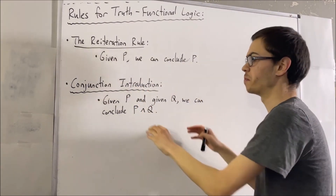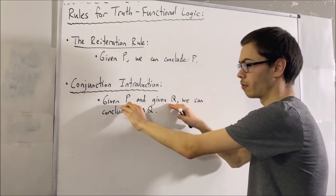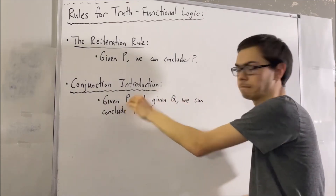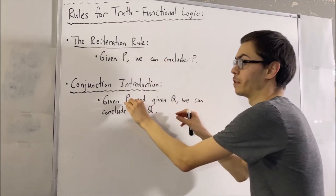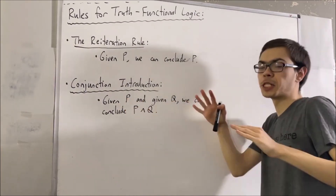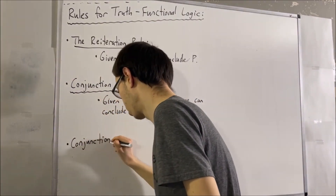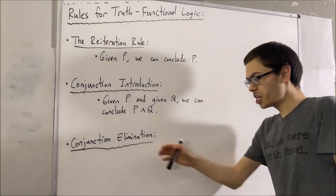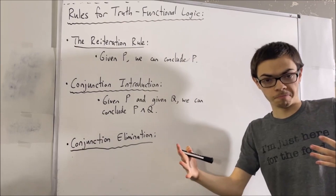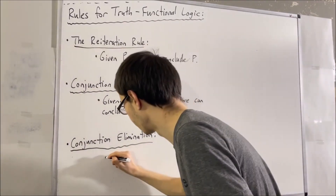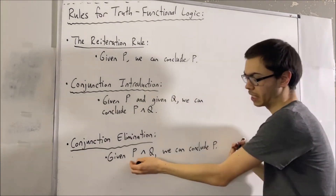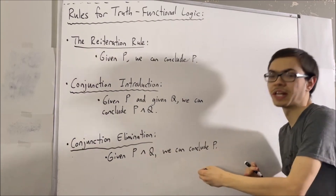It doesn't matter the order in which you've been given P and Q. Whether I was given P first and then Q second, or Q first then P second, doesn't matter. I just have to look for whether or not we're given both P and Q in order to conclude this. For conjunction elimination, if we're given that P and Q is true, we can conclude that P is true, and similarly we can also conclude that Q is true.